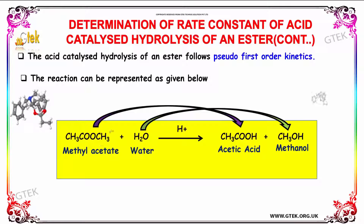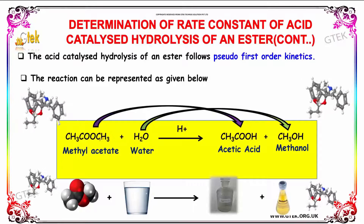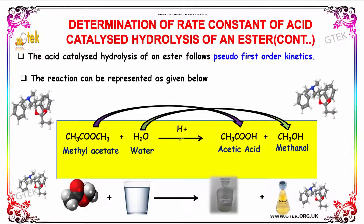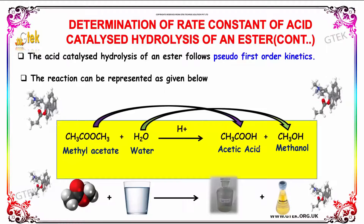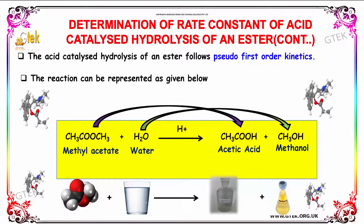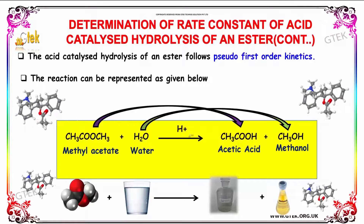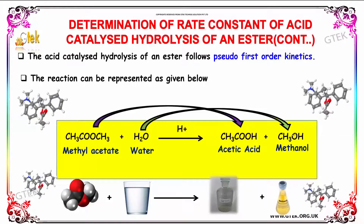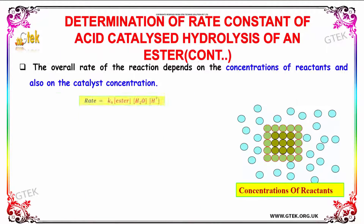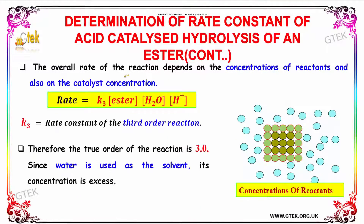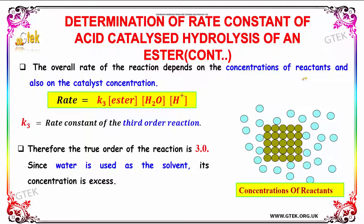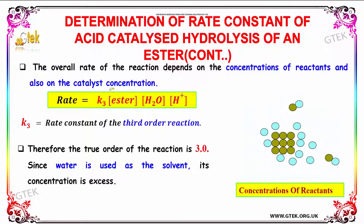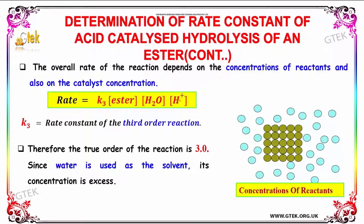The acid-catalyzed hydrolysis of an ester follows pseudo-first-order kinetics. Methyl dimethylacetate reacts with water in the presence of H-plus ions to give acetic acid and methanol. The overall rate of the reaction depends on the concentration of reactants and also on the catalyst concentration. So the rate is equal to K3 times [ester] times [H2O] times [H+].